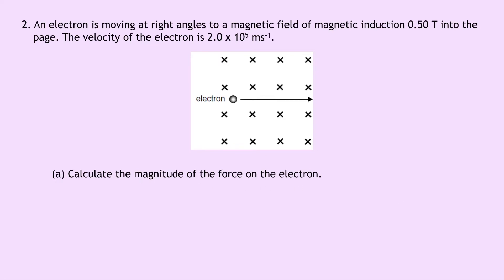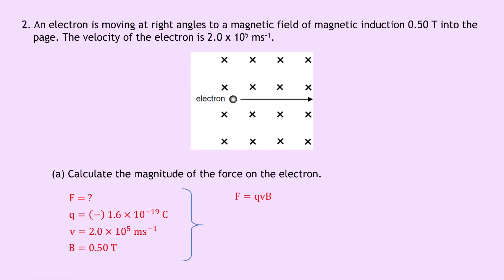Writing down what we know: we're finding force F; the charge on the electron is minus 1.6 times 10 to the minus 19 coulombs, but we'll ignore the negative since we only want the magnitude; the velocity is 2.0 times 10 to the 5 meters per second; and the magnetic induction B is 0.5 tesla. So F equals QVB gives us 1.6 times 10 to the minus 19, times 2.0 times 10 to the 5, times 0.5, which equals 1.6 times 10 to the minus 14 newtons.